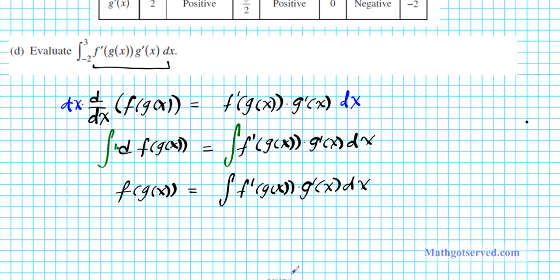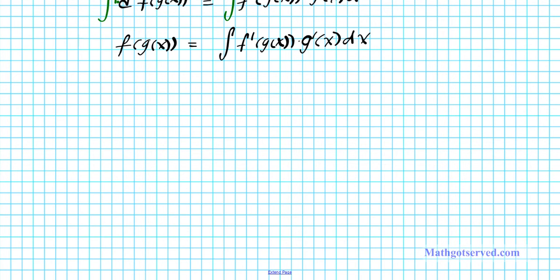Let's go ahead and apply this idea to this problem. The problem asks us to find the definite integral from negative 2 to 3 of f prime of g of x times g prime of x. So the antiderivative of the derivative of a composite function is the composite function f of g of x evaluated at its limits of integration negative 2 to 3. Using FTC part 1, we're going to plug in the limits of integration.